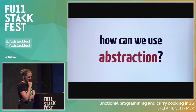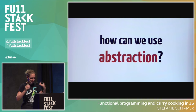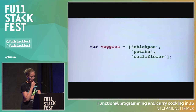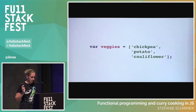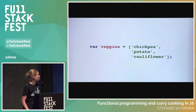The good news is we're already using abstraction. Functional programming just builds on abstractions we know already. The basis of programming is abstracting from a value — by assigning it to a variable, we give it a name and can use it later. In the functional programming world, we don't make a big difference between a value and a function when we name them. We can assign a function to a variable. In JavaScript, we say functions are first-class citizens.